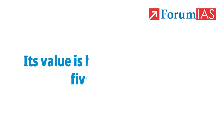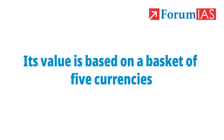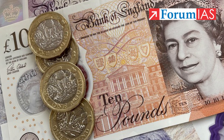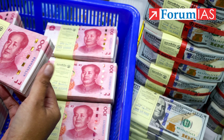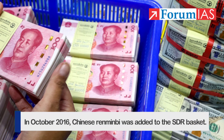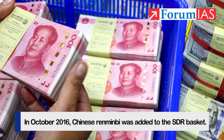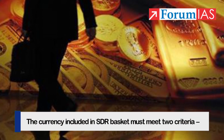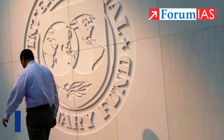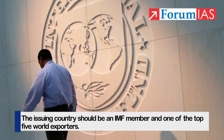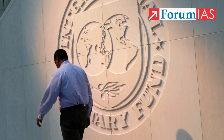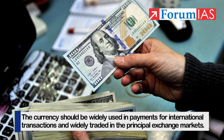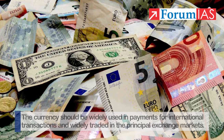The value of SDRs is based on a basket of five currencies: the US Dollar, European Euro, Chinese Renminbi, Japanese Yen, and British Pound Sterling. In October 2016, the Chinese Renminbi was added to the SDR basket. The currency included in the SDR basket must meet two criteria: the issuing country should be an IMF member and one of the top five world exporters, and the currency should be widely used in payments for international transactions and widely traded in the principal exchange markets.